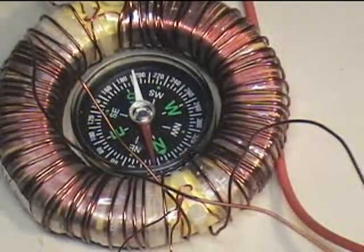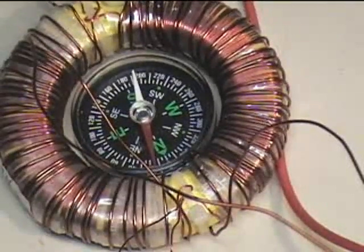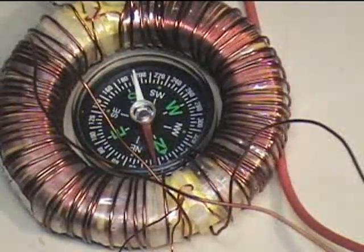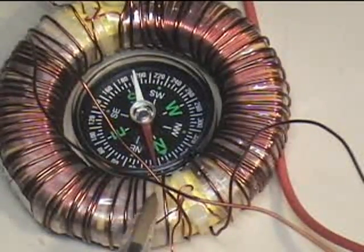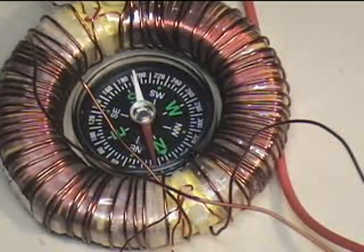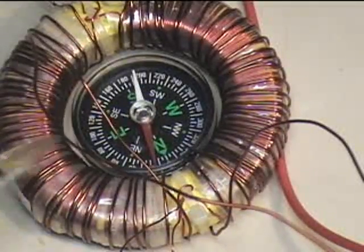This is my bucking toroid with the bucking primary on top, bucking secondary on the bottom. Bucking meaning that they're wound the same one on each side.